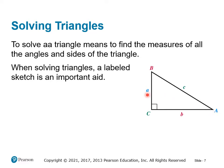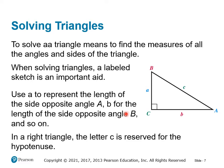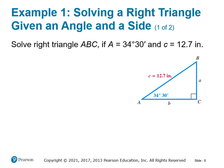Side a is opposite angle A, side b is opposite angle B, etc. Typically, because of the Pythagorean theorem — a squared plus b squared equals c squared — we reserve the hypotenuse for letter c, so we just typically use C for the hypotenuse.